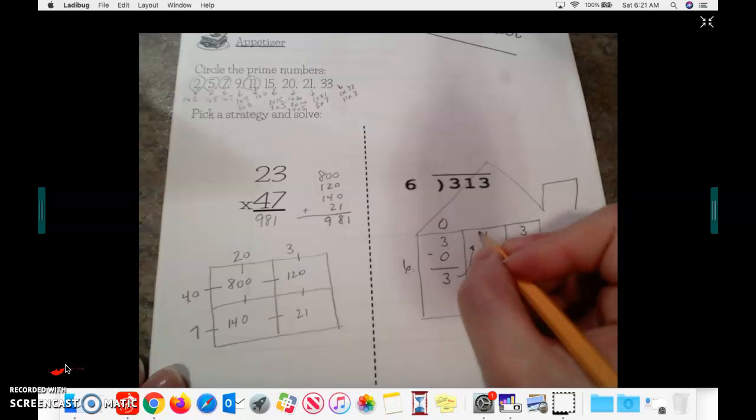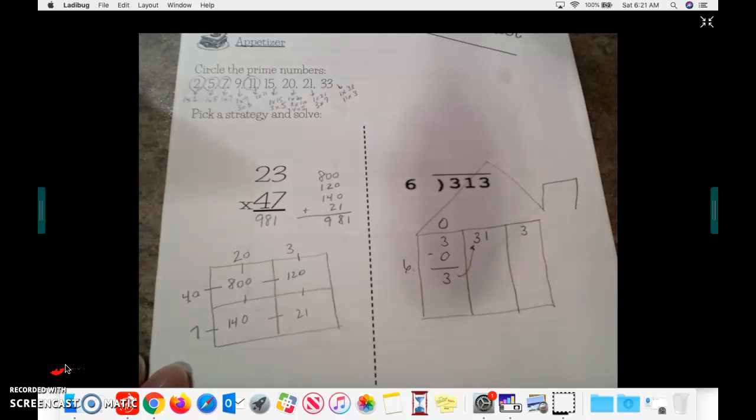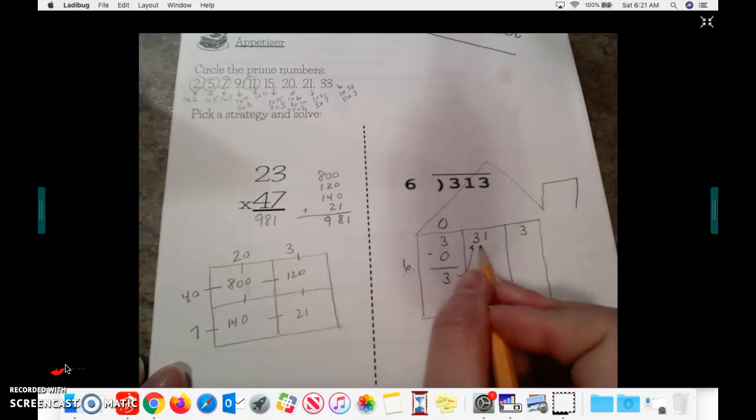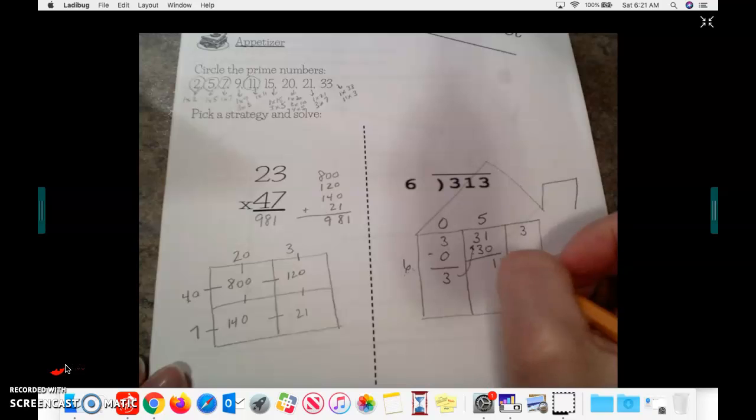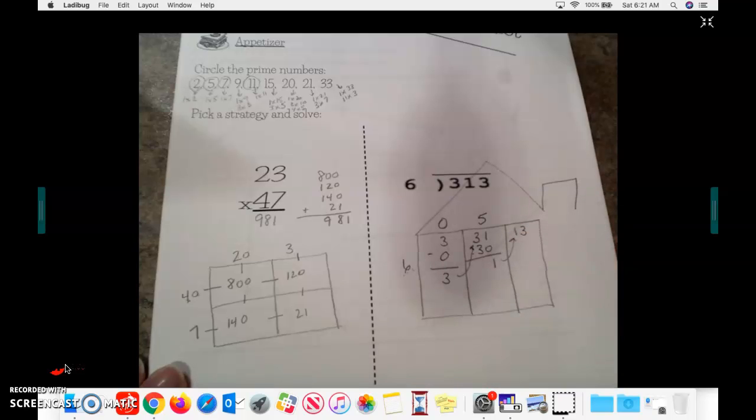This 3 comes up here next to the 1, and now I have 31. 6 goes into 31. I know that if I multiply 6 times 5, I get 30. And then I subtract, I get 1. My 1 comes up here with the 3. I now have a 13.